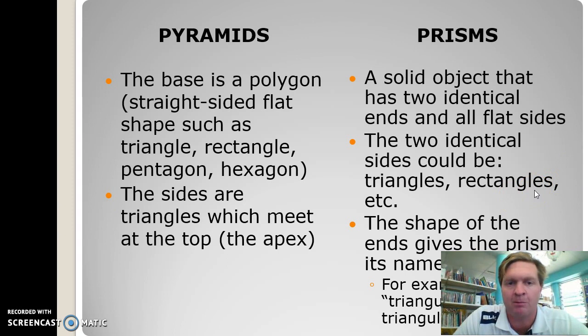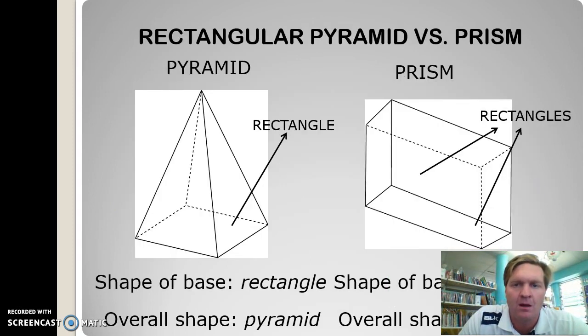Let's have a look at some examples and see if we can identify our criteria relating to pyramids and prisms. First, let's look at what makes a rectangular pyramid a rectangular pyramid. Let's start at the base. The base is a polygon. What sort of base is it? It's a rectangle.